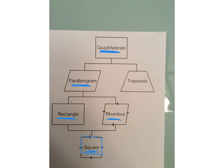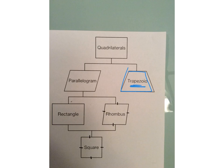A square is not a trapezoid. Trapezoids just have one set of parallel sides, and a square doesn't fall underneath the trapezoid on the family tree. Now let's look at the trapezoid and name all of its names. A trapezoid is also a quadrilateral because it falls underneath the quadrilateral on the family tree. The best name is trapezoid, but it can also be classified as a quadrilateral.